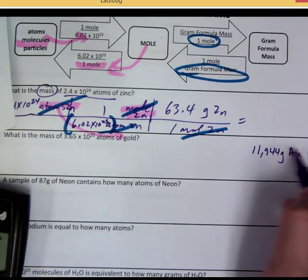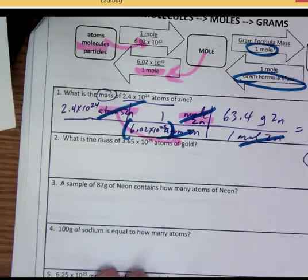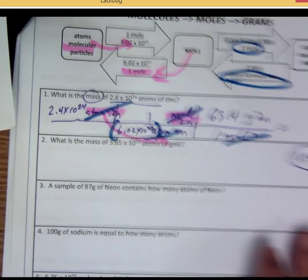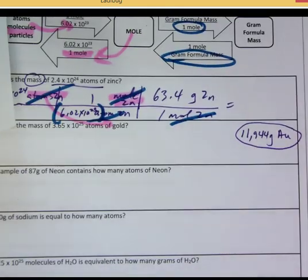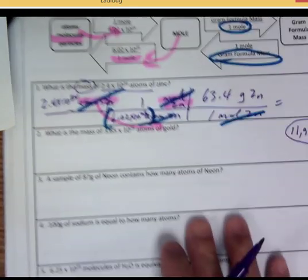You should have gotten 11,944 grams of AU if you have done that correctly. Okay? So check your answer with mine. And if you did it correctly, you should have gotten something like that. Okay?